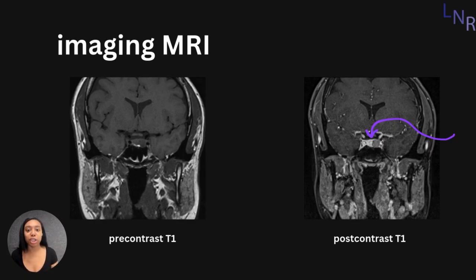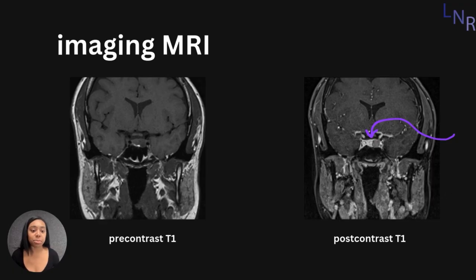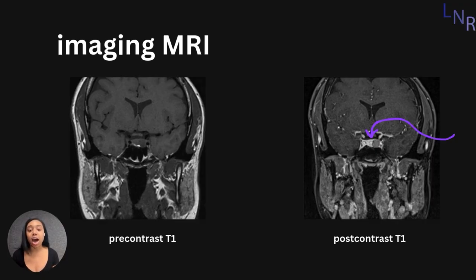To further diagnose a suspected pituitary adenoma, usually an MRI would be used to further investigate these symptoms. On this slide, we have two different MRIs — pre-contrast and post-contrast. On the left side, we have a pre-contrast T1-weighted MRI where we can somewhat look at the abnormal anatomy of the pituitary gland. One defining factor of these pituitary adenomas is the delayed enhancement of the pituitary tumor.